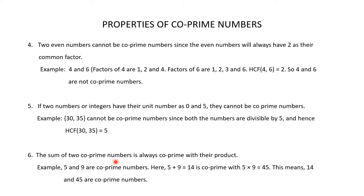The sum of two co-prime numbers is always co-prime with their product. For example, consider 5 and 9, which are co-prime numbers. Their sum is 14 (5 + 9 = 14) and their product is 45 (5 × 9 = 45). The sum 14 and the product 45 are co-prime numbers — if you find the factors of 14 and 45, their HCF is 1.